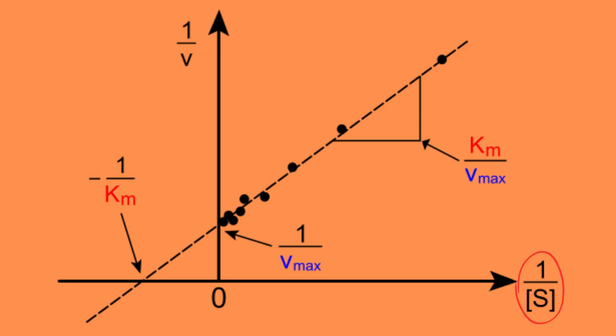We also know that the y-intercept displays 1 over the theoretical maximum of the reaction and the x-intercept displays negative 1 over the Michaelis constant.